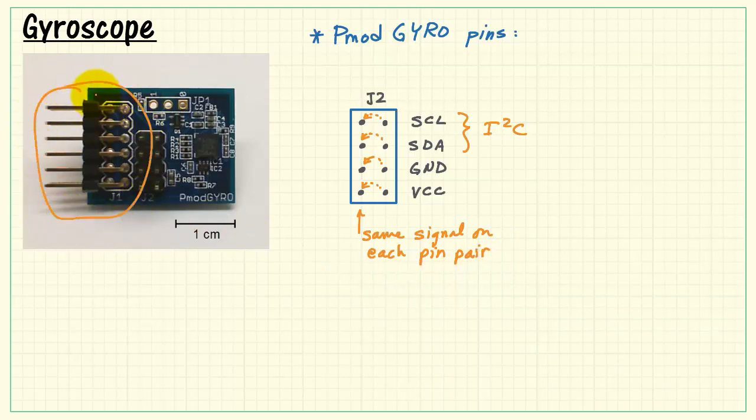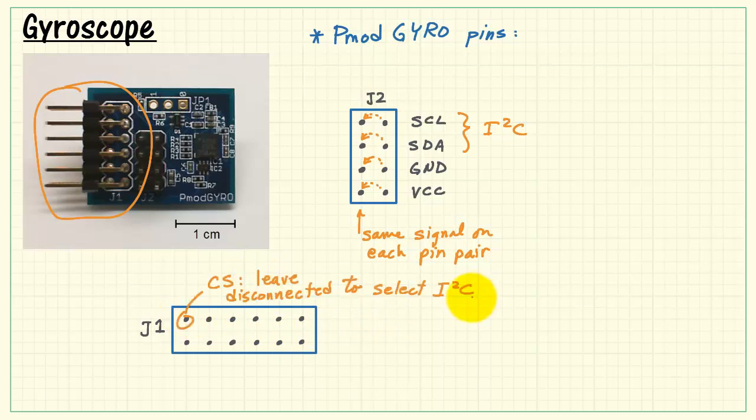Now looking at connector J1 on the side. If we look at this in side view with the board facing up like this. Here we have the CS pin, and this selects whether or not you're doing SPI or I2C mode. Just leave it disconnected to select I2C.